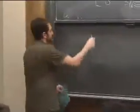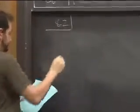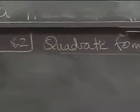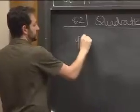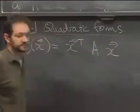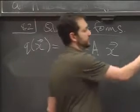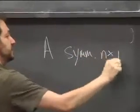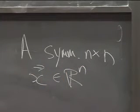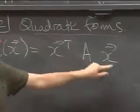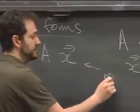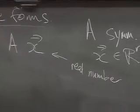Moving to section 8.2: quadratic forms. We define Q(x) = xᵀAx, where A is a symmetric n×n matrix and x ∈ Rⁿ. This product (1×n)(n×n)(n×1) gives a 1×1 result — just a real number. An interesting special case: if A is the identity, Q(x) = xᵀx = x·x.